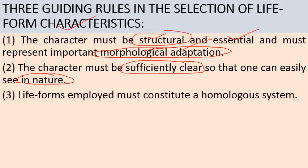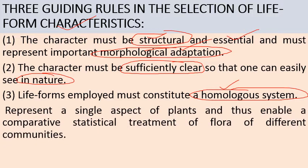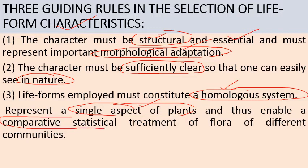The third rule is that the life forms employed must constitute a homologous or uniform system for all plant life forms, and should represent a single aspect of the plant — a single character that we compare with other plants — thus enabling a comparative statistical treatment of the flora of different communities, so we can compare that character across different plant communities.